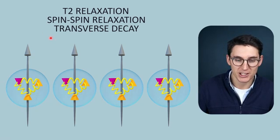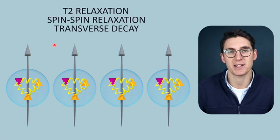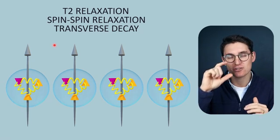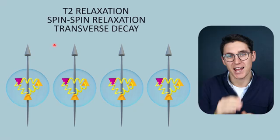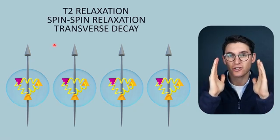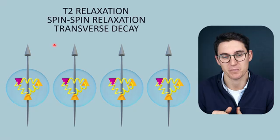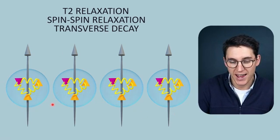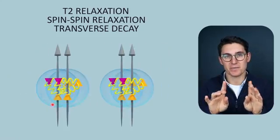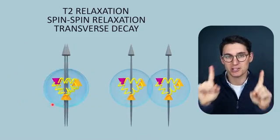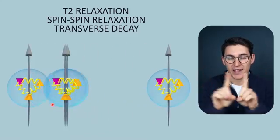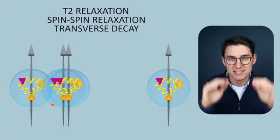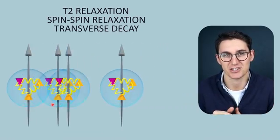Another term you may come across is transverse decay. As protons dephase, they lose their net transverse magnetization vector and we get a loss of signal, because it is the transverse signal that we measure in the MRI machine. Imagine these protons as basketballs bouncing into one another — as spins with different energy levels interact, energy is transferred, the spins become out of phase, and that is the predominant mechanism for the loss of transverse magnetization.